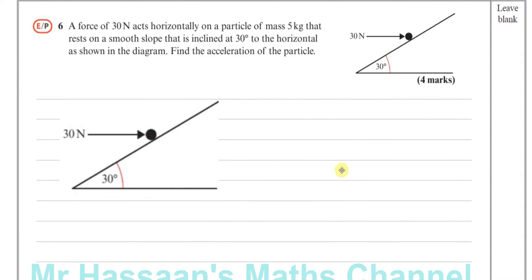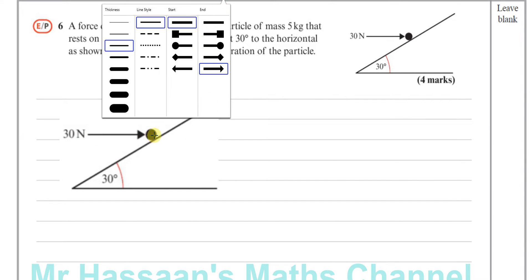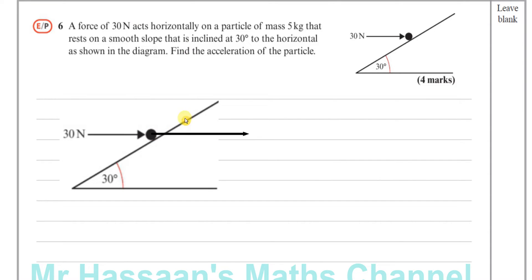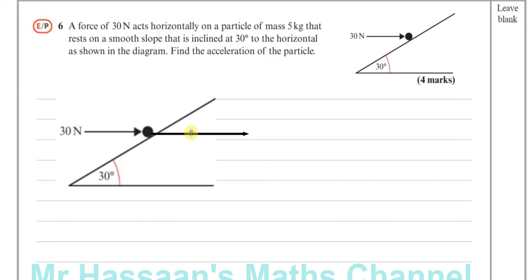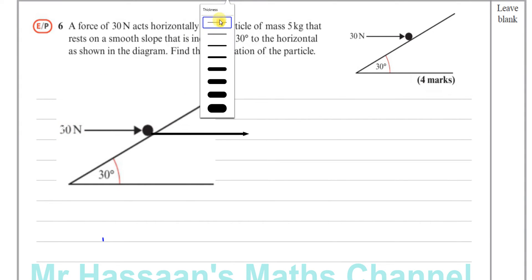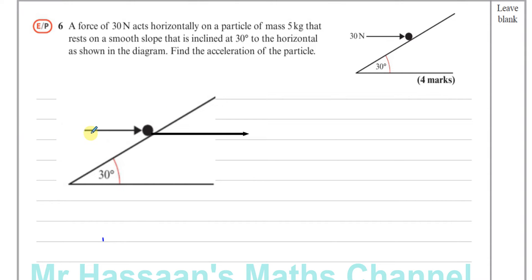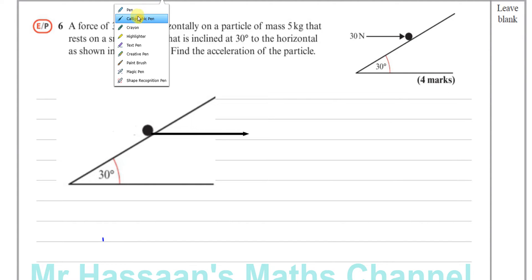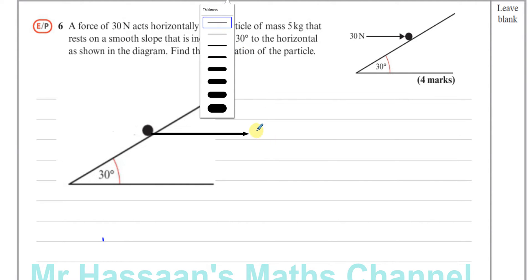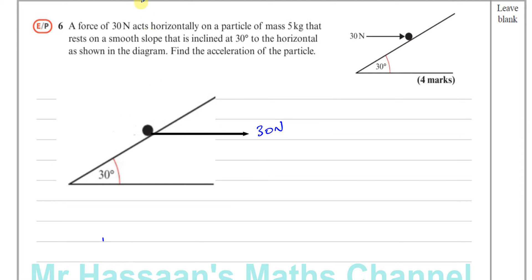What I like to do when I have a question like this is redraw the forces so that they act in this direction here — acting away from the plane rather than towards it. I find it easier to think in terms of resolving the forces, because we have to resolve the forces parallel and perpendicular to the plane. So this is 30 newtons acting horizontally on the particle of mass 5 kilograms.